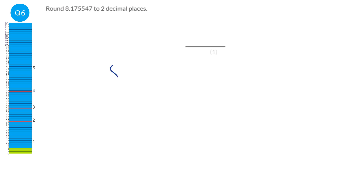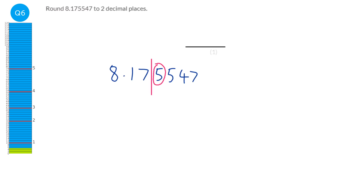Writing the number a little bigger: it says two decimal places, so we draw a line after the second decimal place. All numbers to the right disappear. We look at that next digit — if it's less than five we keep the number to the left, giving 8.17. But if it's five or more, the seven goes up to eight, so the answer is 8.18.